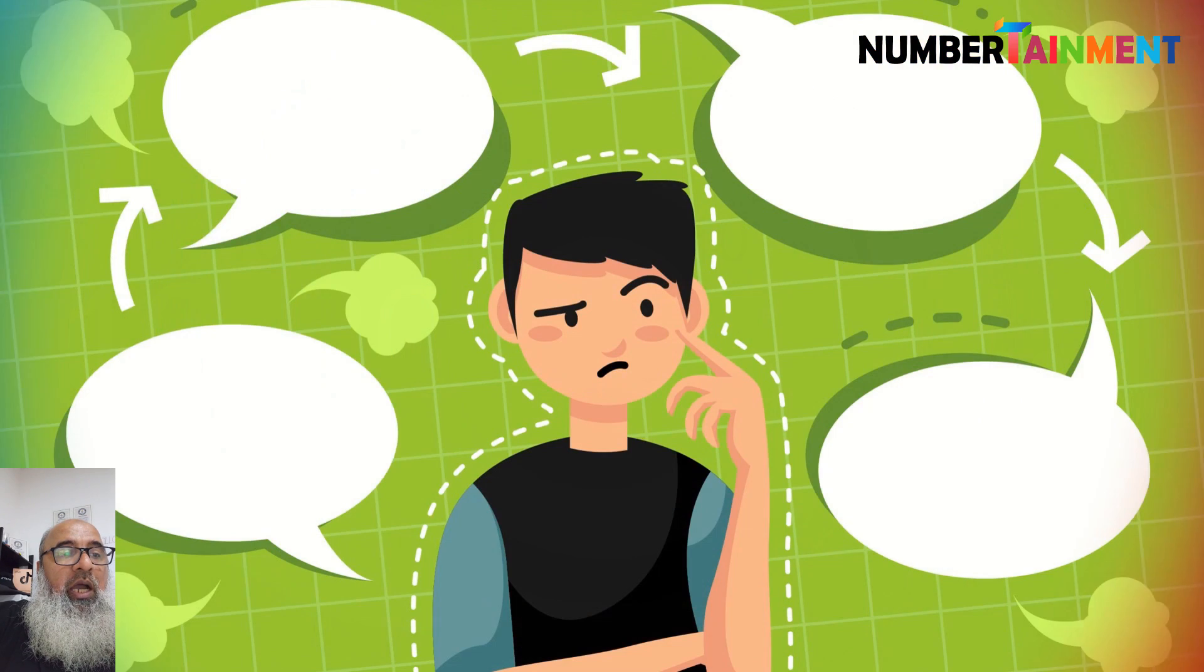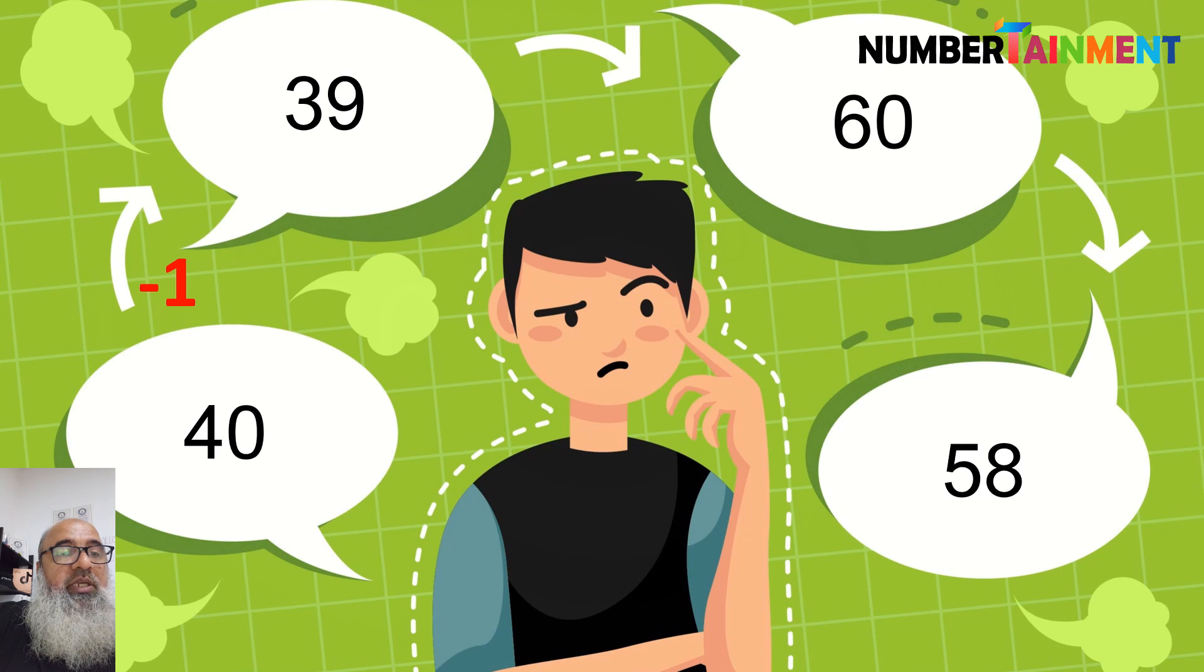Now if we think of the number 39, we can see that 39 is close to 40 and is 1 short of 40. And we can also see that 58 is close to 60 and is 2 short of 60. This makes it easier to work with numbers. We can add and subtract them easily.